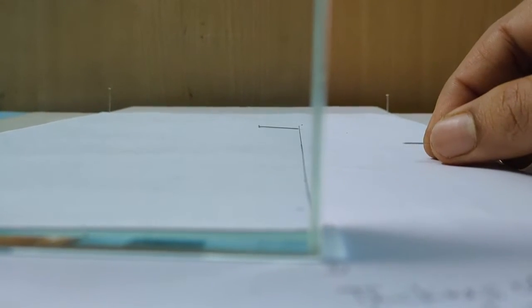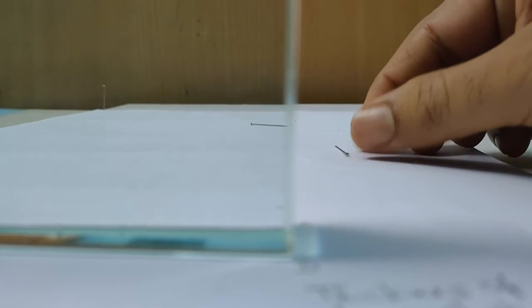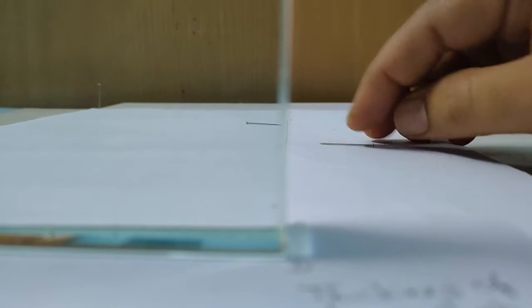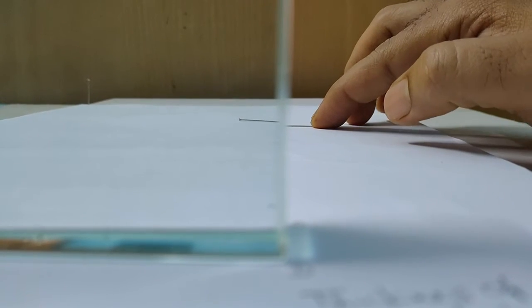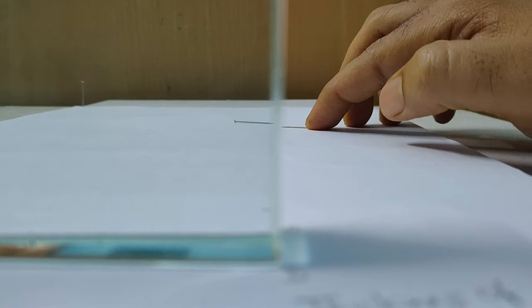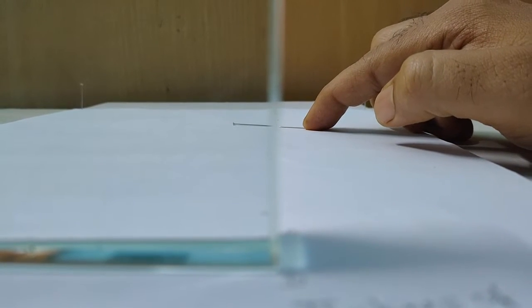Now take another pin and by looking at the first pin from the other side of the slab, try to place the pin so that it forms a straight line with the first pin.